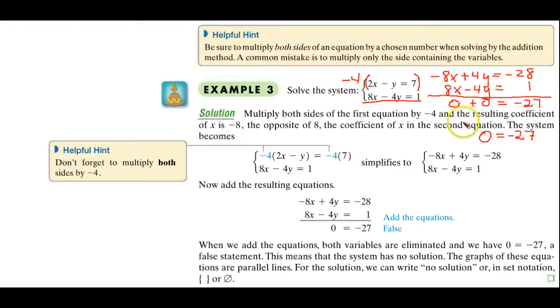Now I end up with a 0 equals a negative 27. Is this a true statement? No. This is false. Well, what did we say in the previous section if we end up with a false statement? That these lines are parallel. These are parallel lines. Will there ever be a solution? And the answer is no. So for example 3, we have no solution.